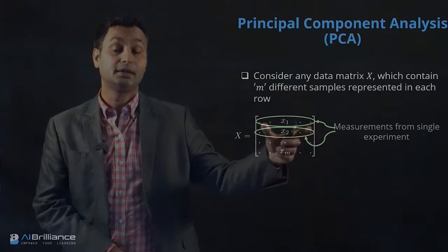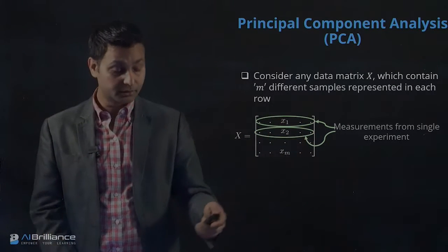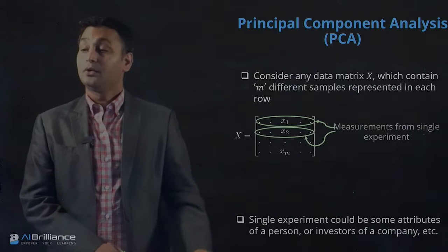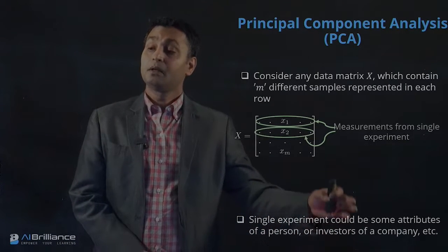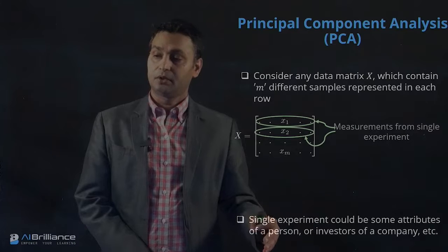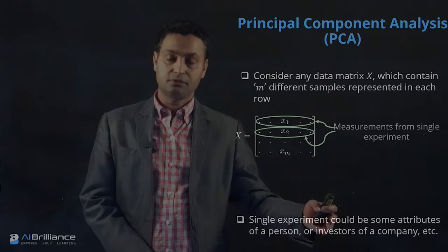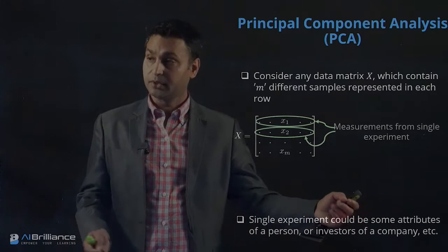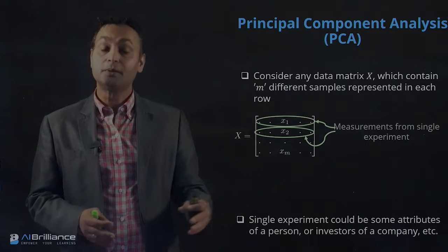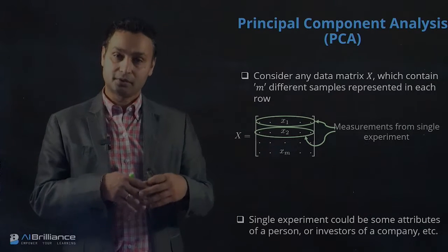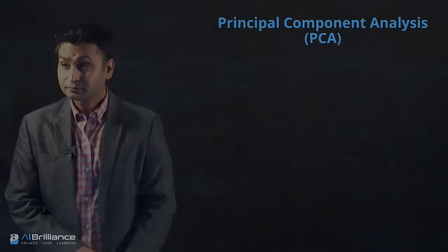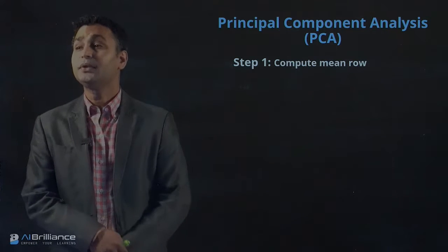Each row measurement from a single experiment could be images or data captured from multiple different sensors. A singular event could be a person's image or data related to investor finance — depending on what you're capturing, your data matrix will represent different things.